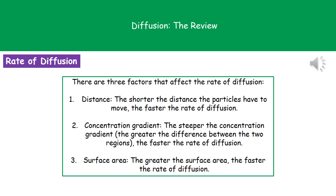We need to remember these three factors that affect the rate of diffusion. First is distance. If we have a shorter distance for the particles to move, then the rate of diffusion increases. If we think back to our leaves, they had a shorter or smaller diffusion pathway. That's why leaves are thin.